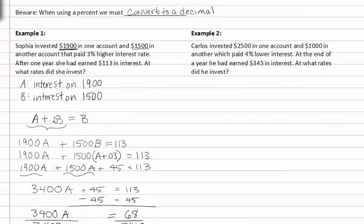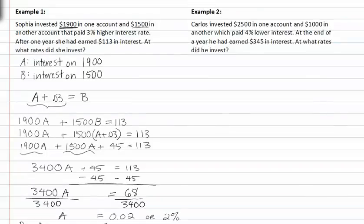In example two, Carlos invests $2,500 in one account and $1,000 in another, which paid 4 percent lower interest. At the end of a year he had earned $345 in interest. At what rates did he invest?